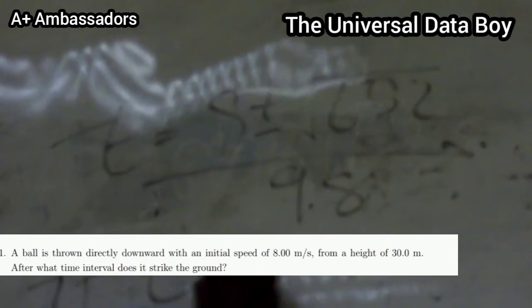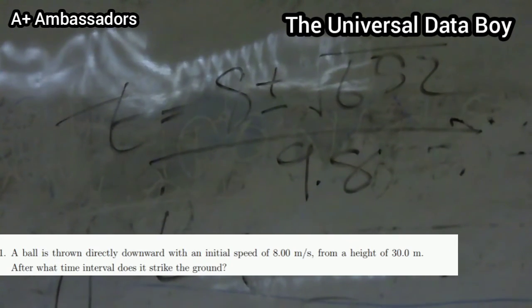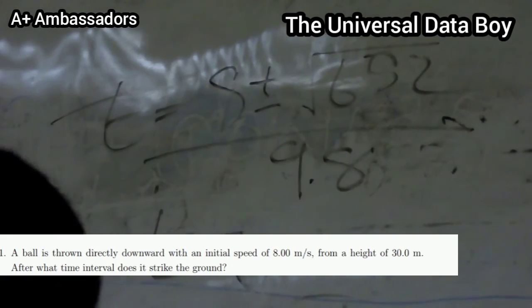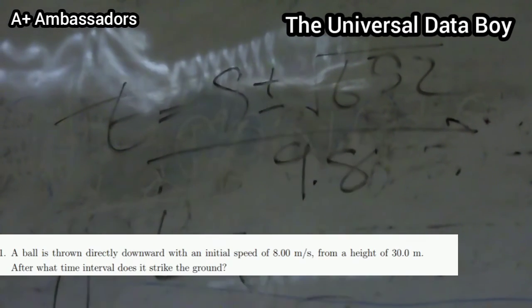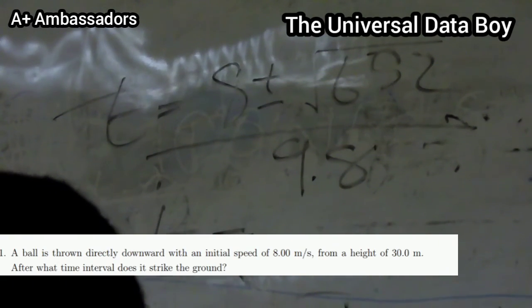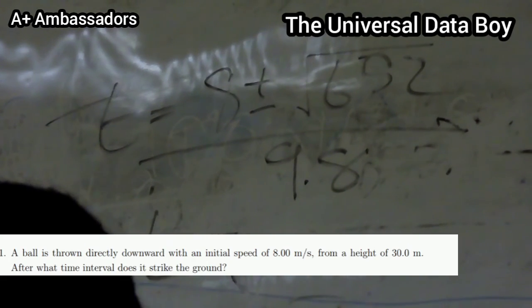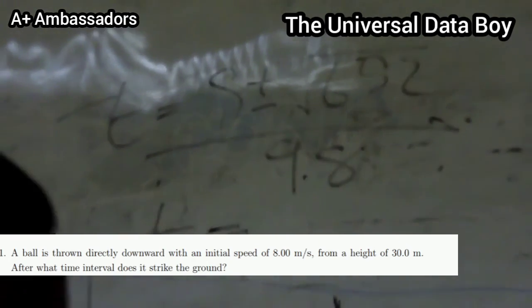The square root - our t is going to be 8 ± √652 over 2 × -4.9. So now we have our t.